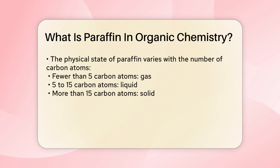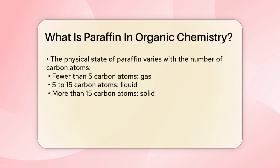One of the key characteristics of paraffin is its physical state, which depends on the number of carbon atoms in the molecule. If a paraffin molecule has fewer than 5 carbon atoms, it is usually a gas. With 5 to 15 carbon atoms, it becomes a liquid, and with more than 15 carbon atoms, it is a solid.